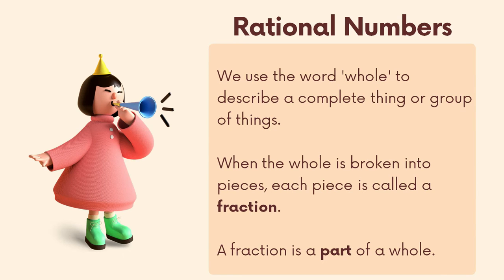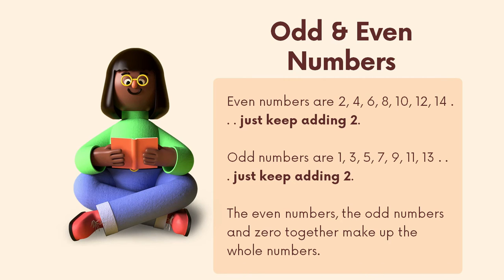Rational numbers: we use the word 'whole' to describe a complete thing or group of things. When the whole is broken into pieces, each piece is called a fraction — a fraction is a part of a whole.